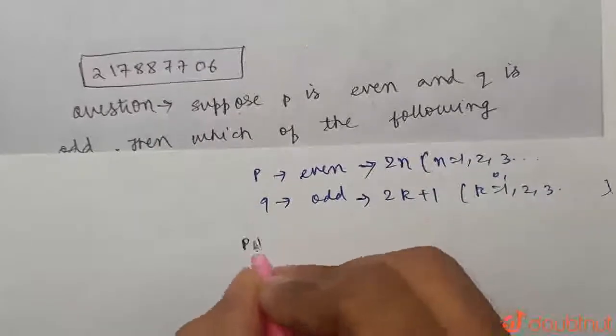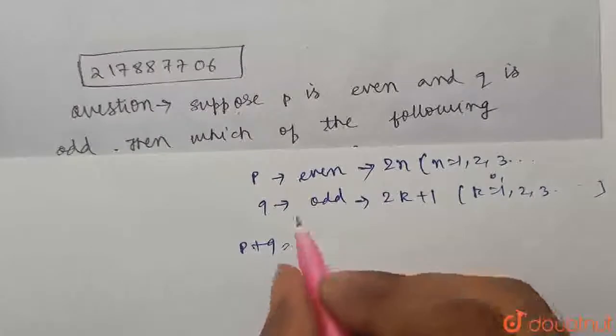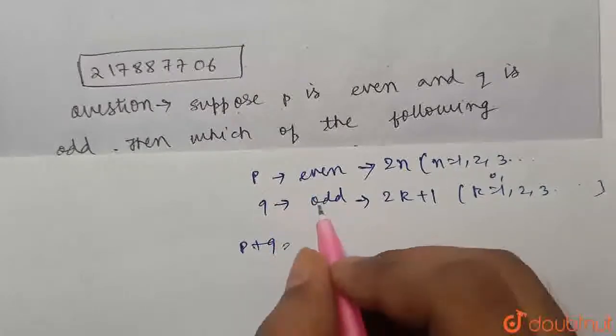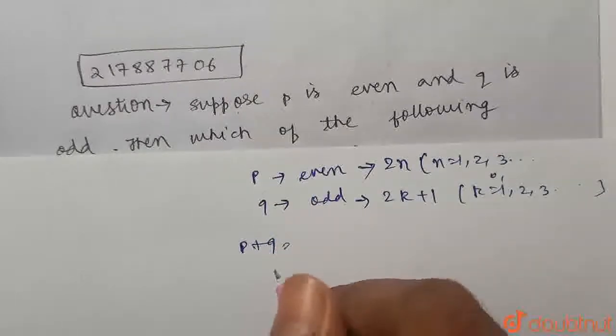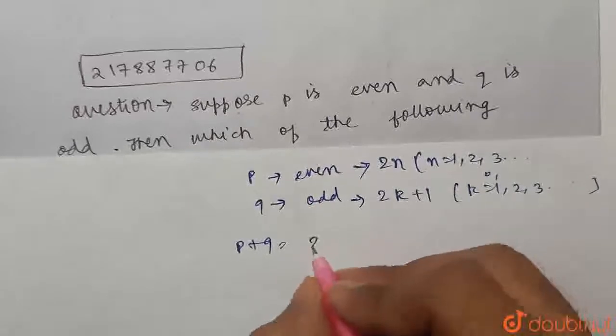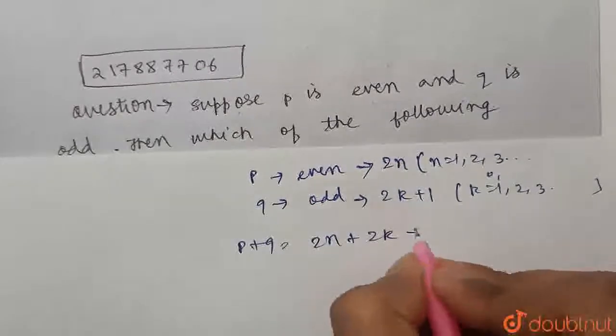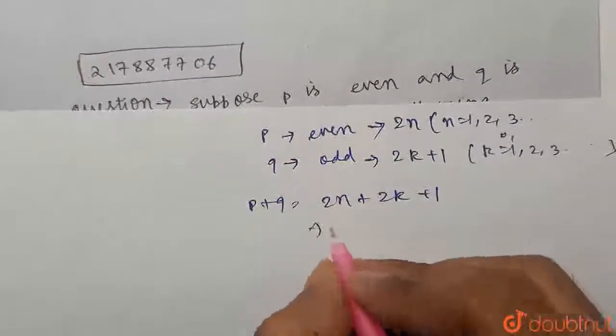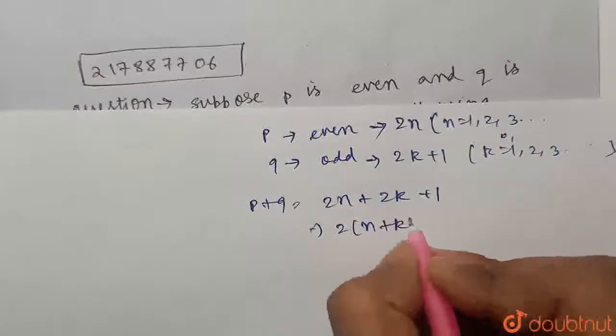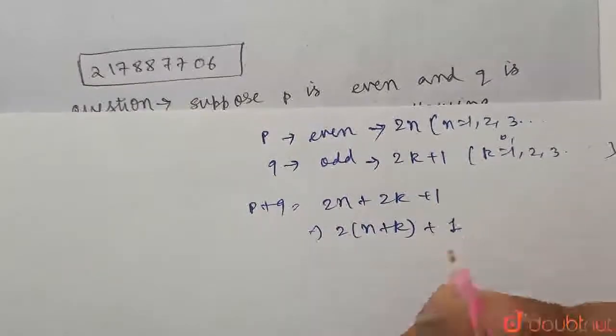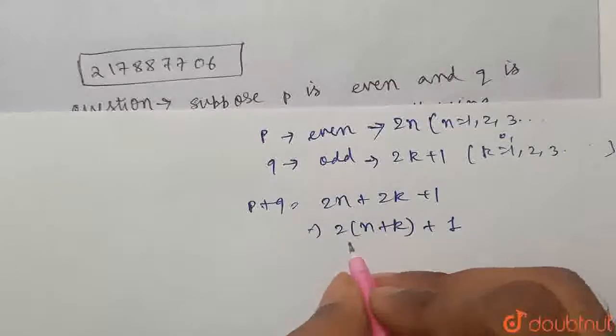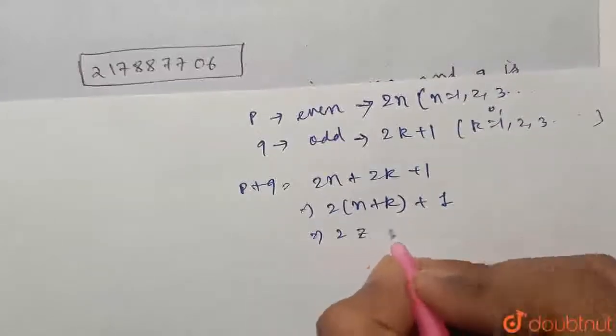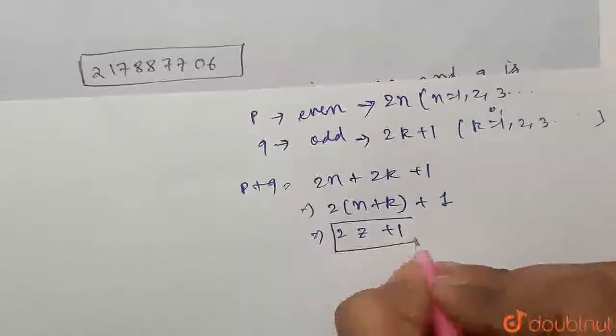Now if I add P plus Q, mind you, when you add even and odd, it will always be odd. See how? 2n plus 2k plus 1. If you take 2 as common, 2 times (n plus k) plus 1. You see, n plus k will be again a number. Let us say 2z plus 1. Now this is an odd form.